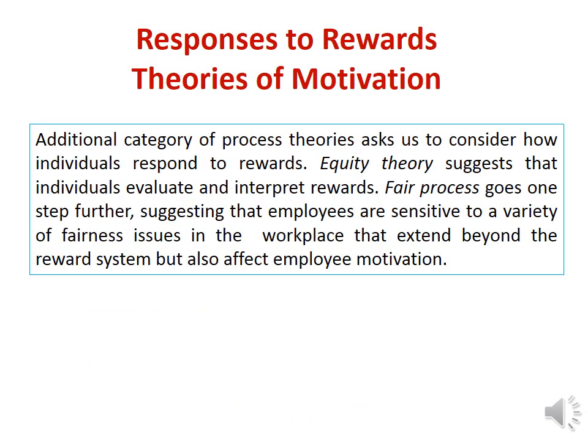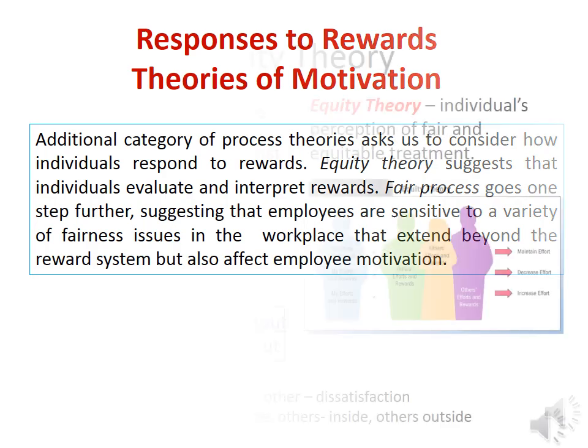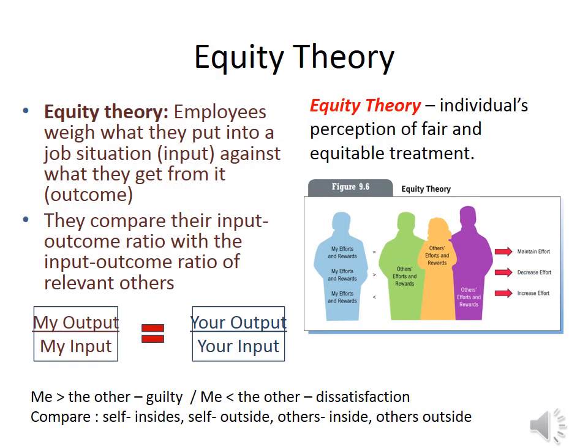An additional category of process theories asks us to consider how individuals respond to rewards, focusing on equity theory and organizational justice theory. Equity theory focuses on individuals' perceptions of fair and equitable treatment. Employees evaluate their input-outcome ratio with relevant others, comparing their effort relative to their outcomes and their ratio relative to others inside and outside the organization.